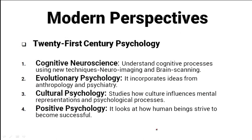Newer perspectives have also emerged with the start of the new century. The cognitive neuroscience perspective focuses on understanding cognitive processes using new techniques including neuroimaging and brain scanning. It looks at how the brain processes information and why people behave in a certain way. With the arrival of new technologies such as MRI, fMRI, PET scans, and optical imaging, this perspective is able to study the brain in more detail and understand how it relates to behavior.